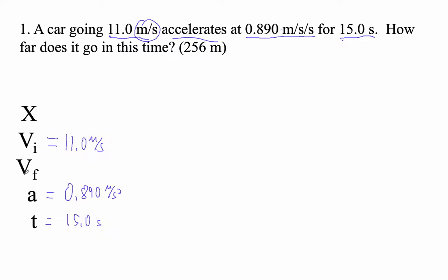And then we want to know how far it goes. So we're going to use a formula that has no VF. And this is the one. X is VIT plus one half AT squared. So X, and then we don't have to solve anything. It just gives us X. It's designed to give us X.